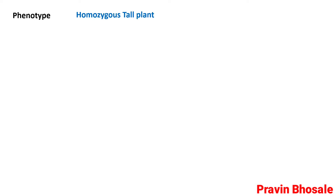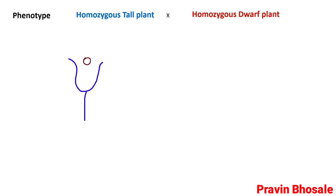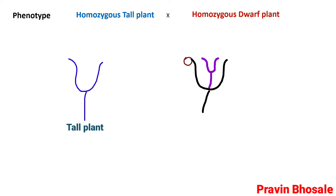Phenotype means external appearance. Homozygous tall plant is crossed with homozygous dwarf plant. In crossing, we take the pollen grains of a flower of a tall plant and deposit on the stigma of the flower of a dwarf plant, or vice versa. It is called as crossing.